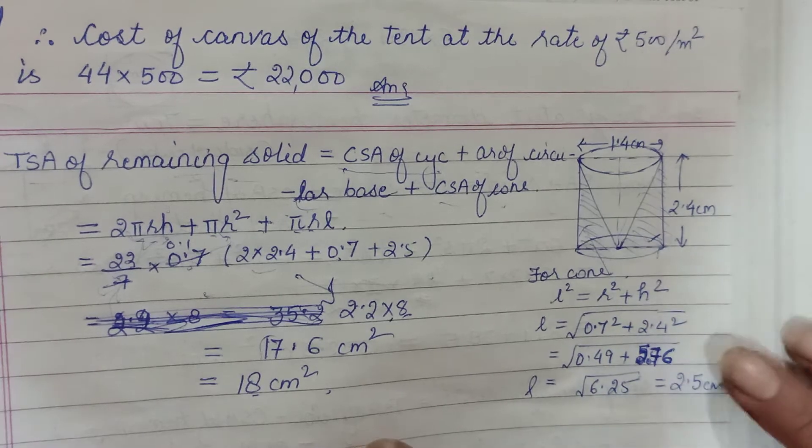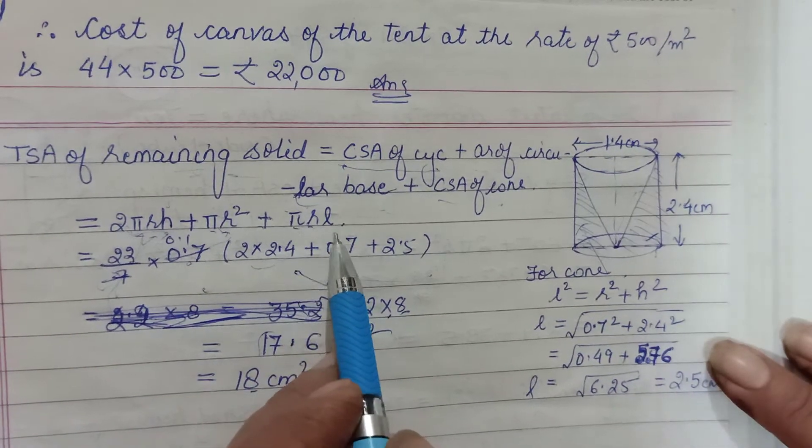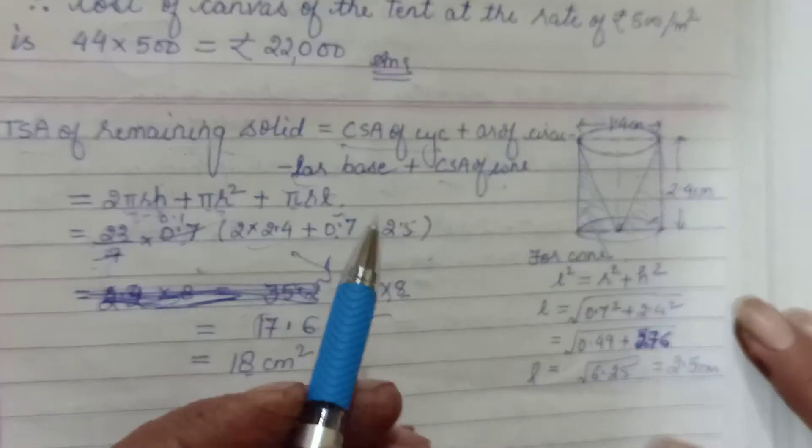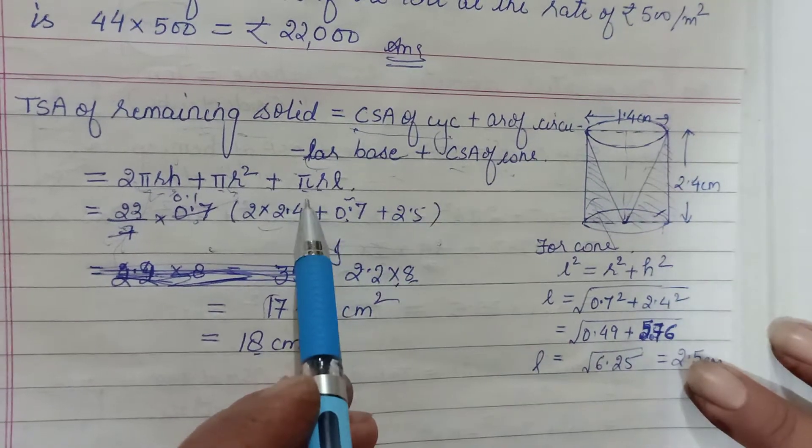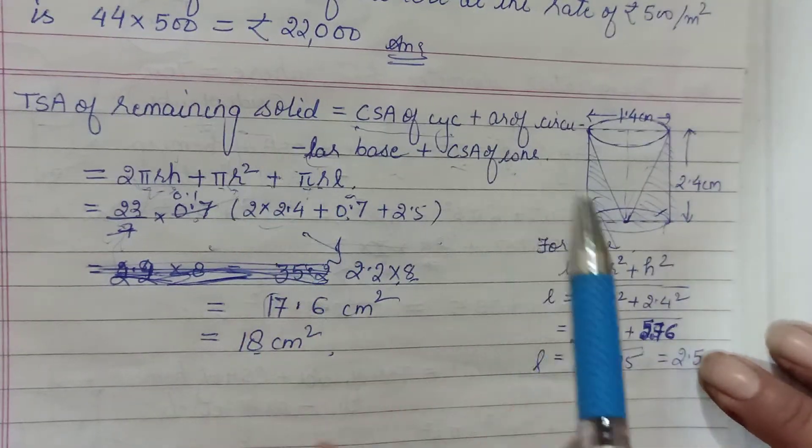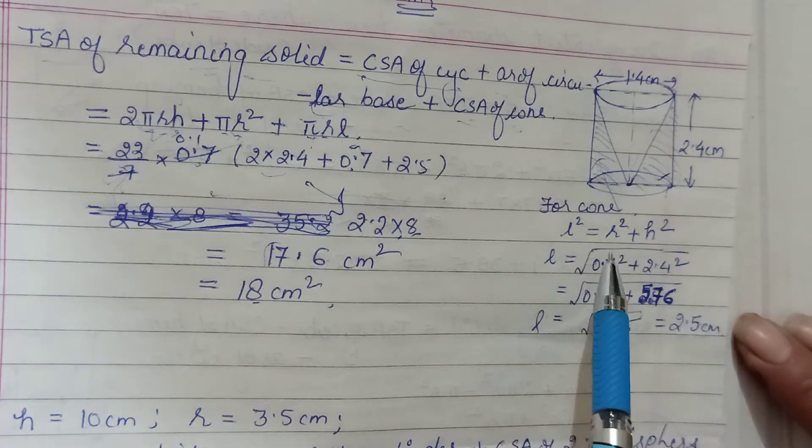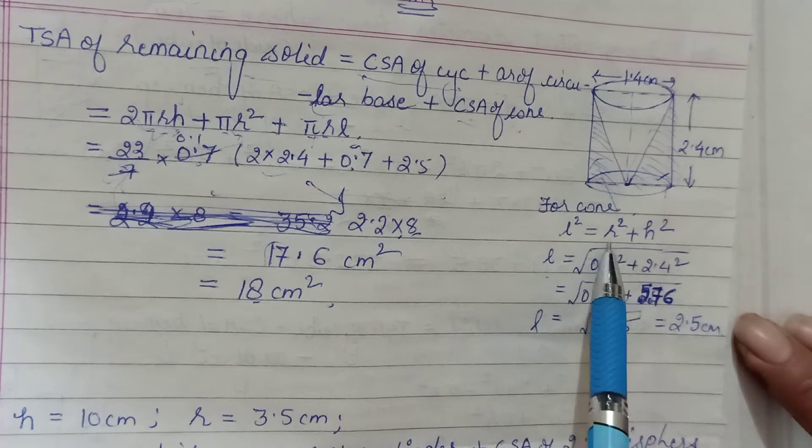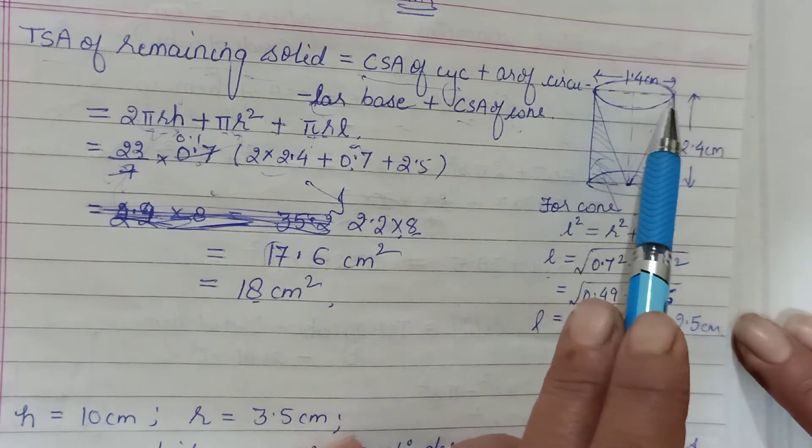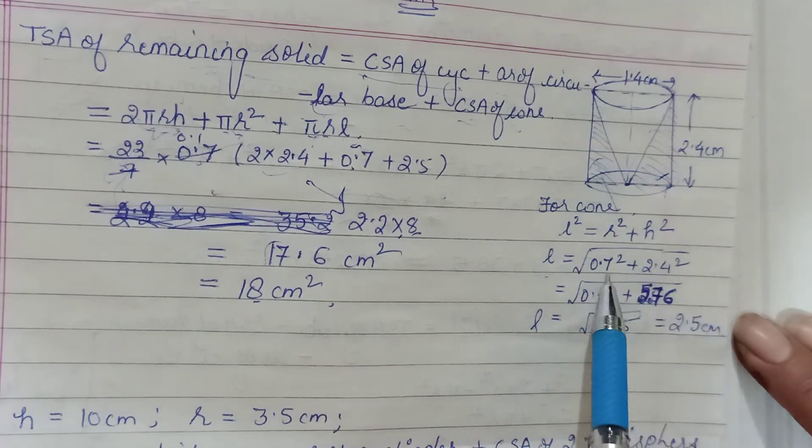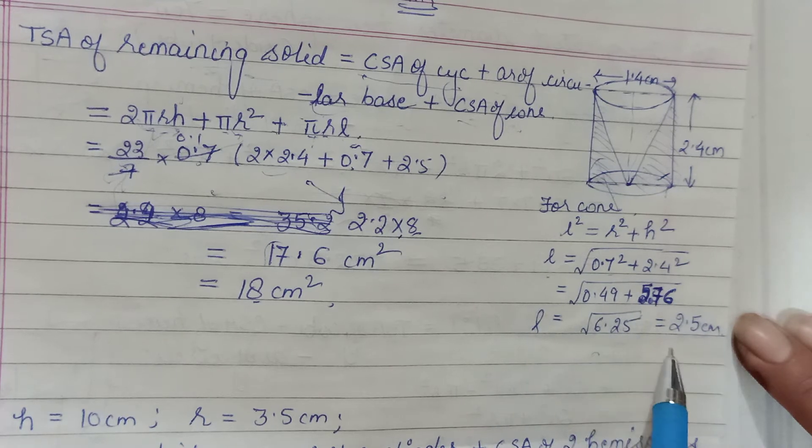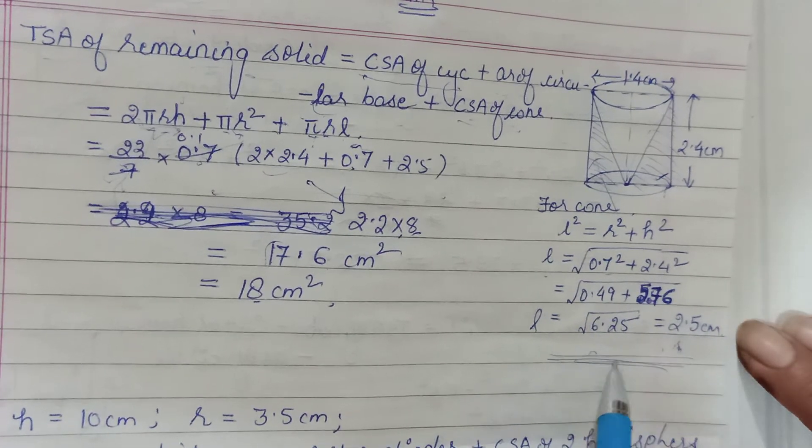Yes, one more thing here - we have used πrl because we said CSA of cone which is πrl, and l was not given. But yes, it's high time - you have done so many equations of this kind where you know that if it is a cone, then you can find l with the help of r and h. So r I know that it was 0.7, h was 2.4, so you will first have to calculate your l. So take care of that - l you will remove, substitute here and get your answer.